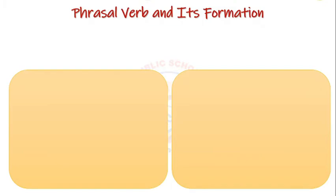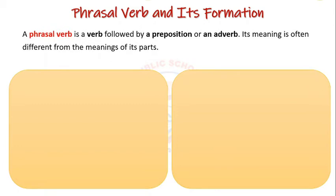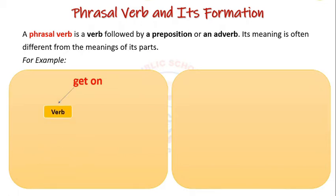What is a phrasal verb and how is it formed? A phrasal verb is a verb followed by a preposition or a particle. Its meaning is often different from the meaning of its parts. For example, 'get on' is a phrasal verb. Here, 'get' is a verb and 'on' is a preposition.